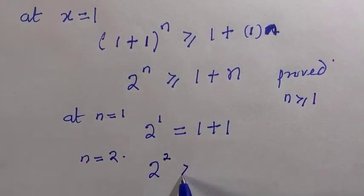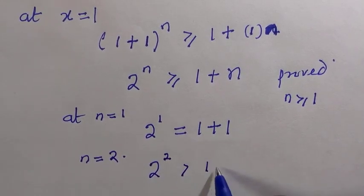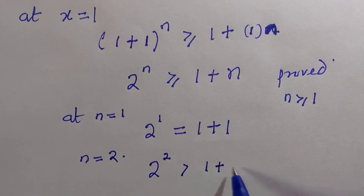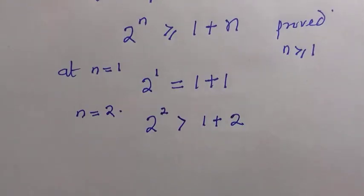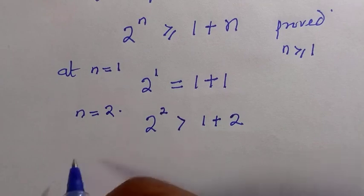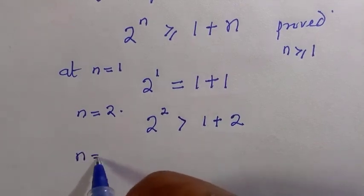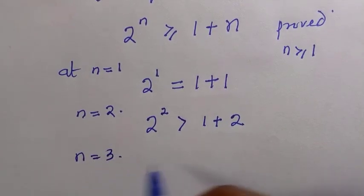But for any value beyond 1, suppose n equals to 2, so this is always greater than 1 plus 2, because 2 raised to power 2 is 4, and 4 is greater than 3.